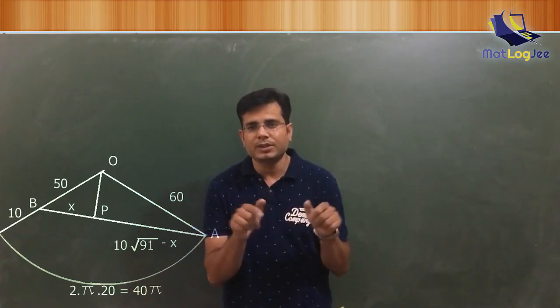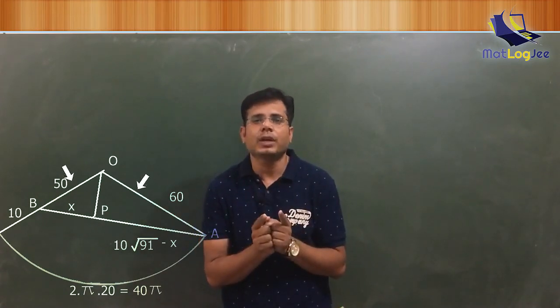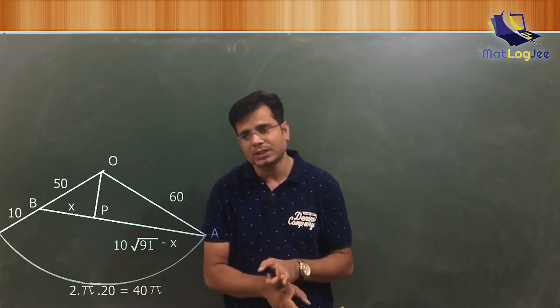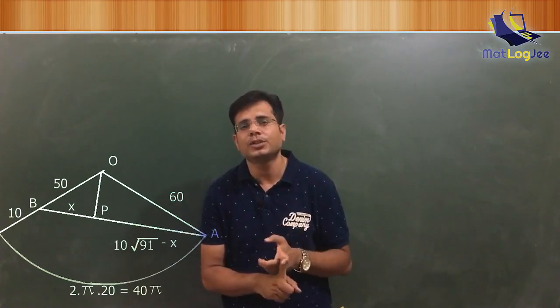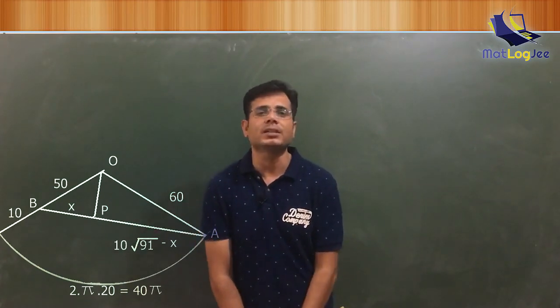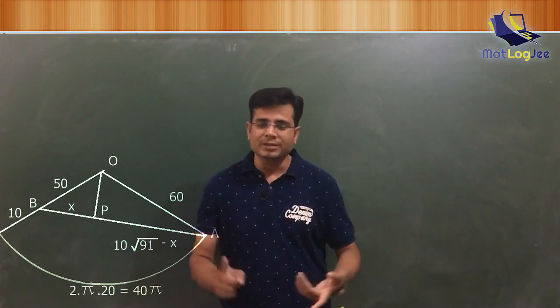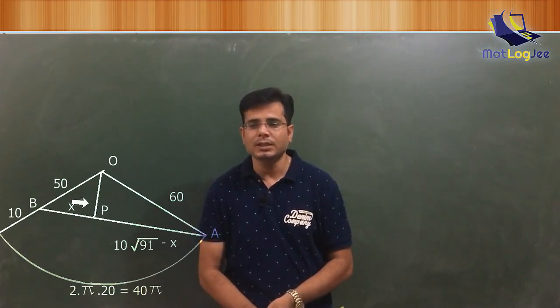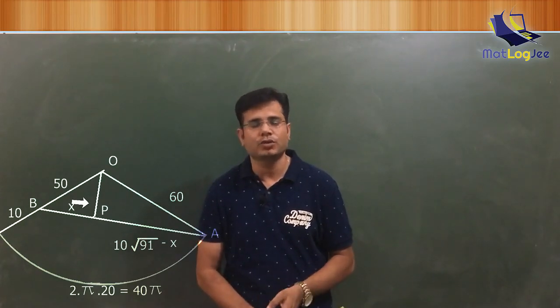If you observe the diagram, then you can see two triangles inside the big triangle. And these two are right angle triangles, which have one side common. And we know the dimension of remaining two sides of these triangles. So use Pythagoras theorem to find the side which joins P to the cone's vertex.